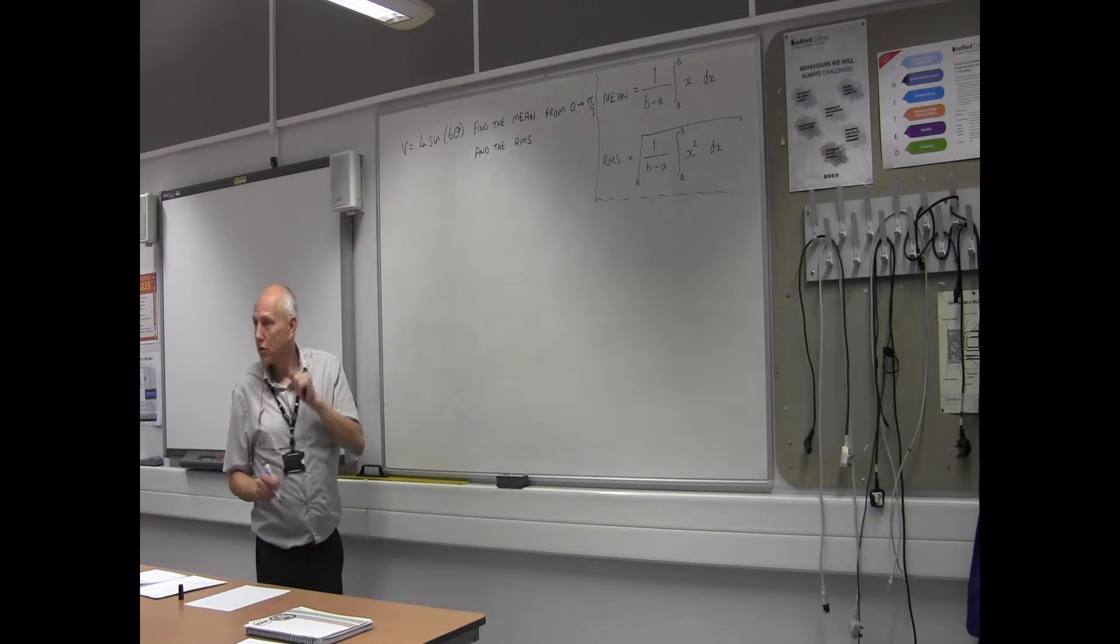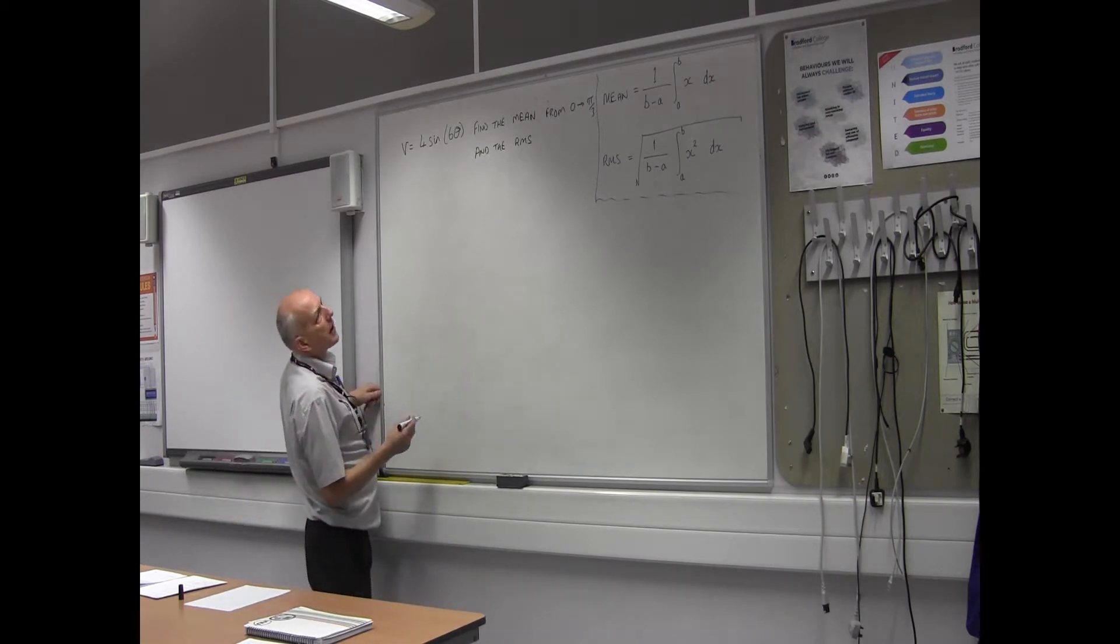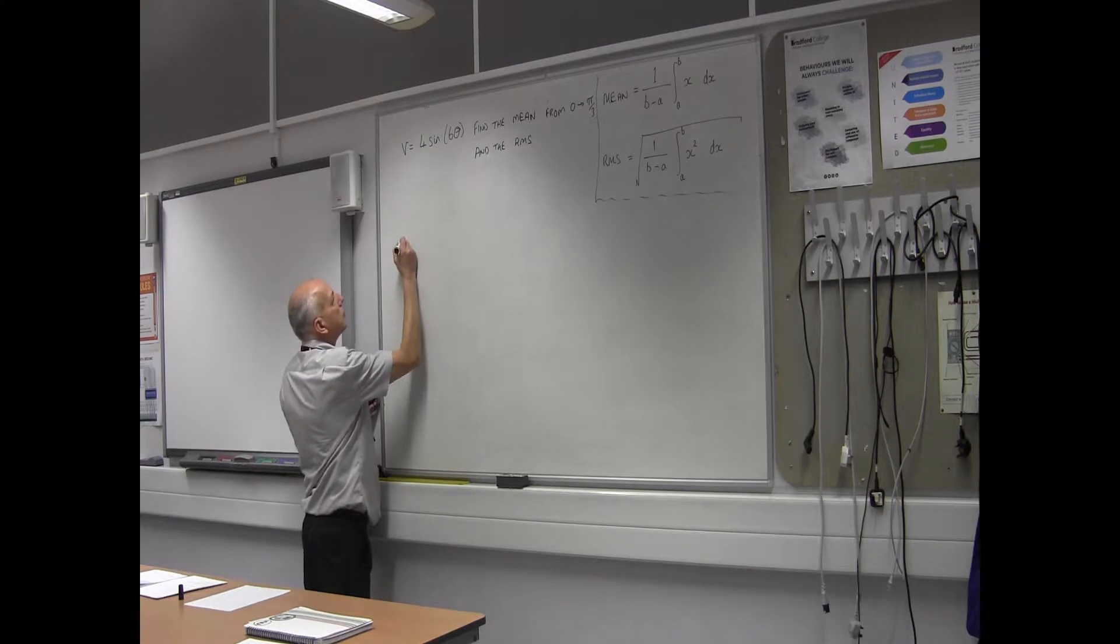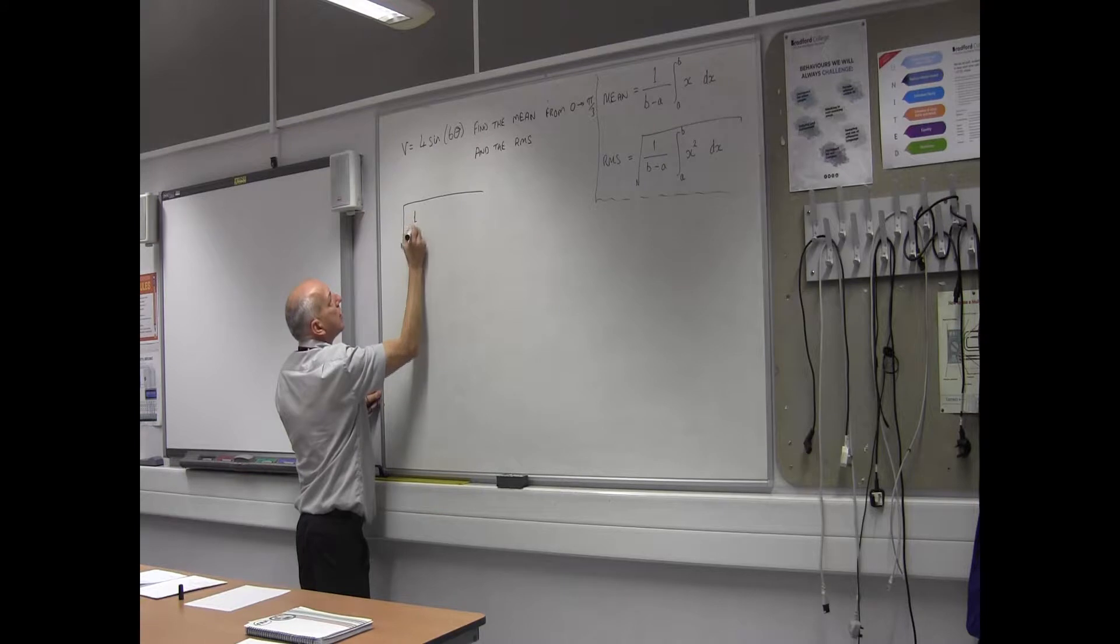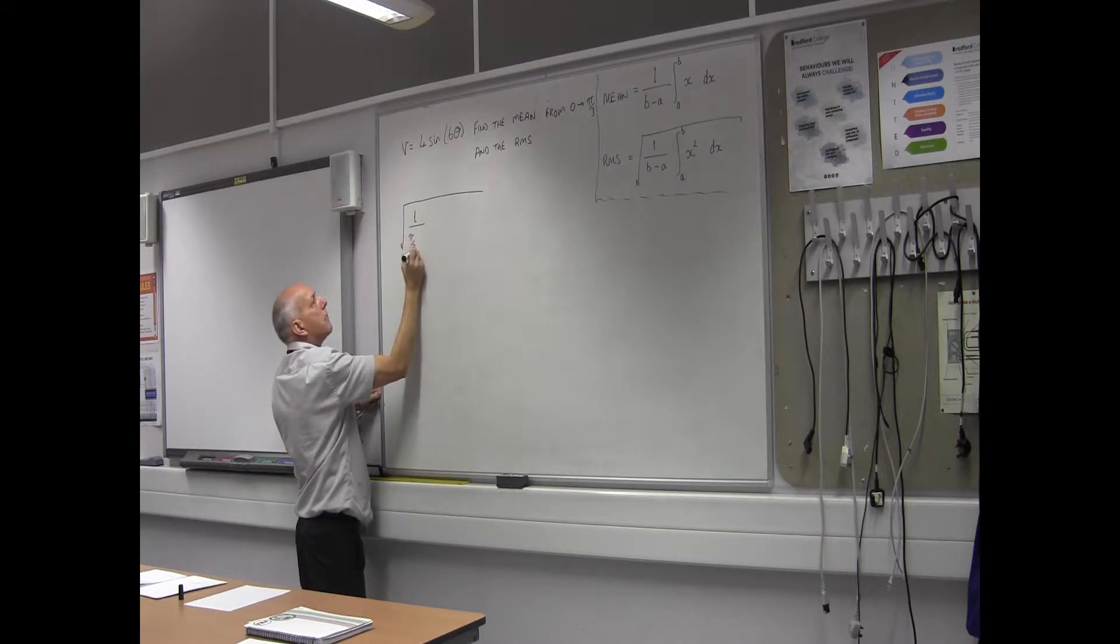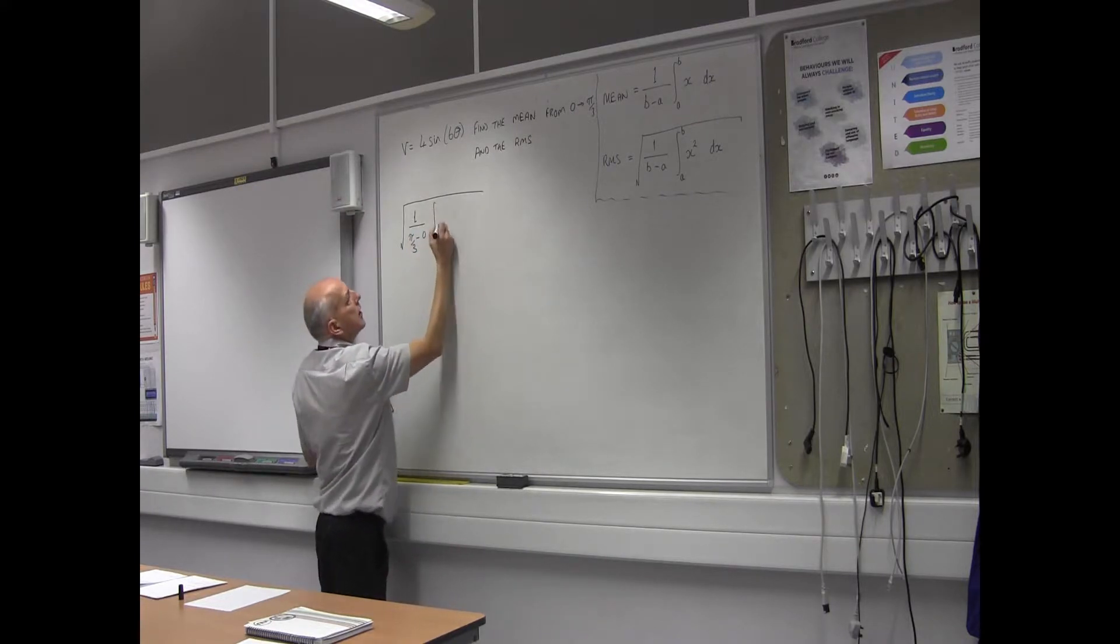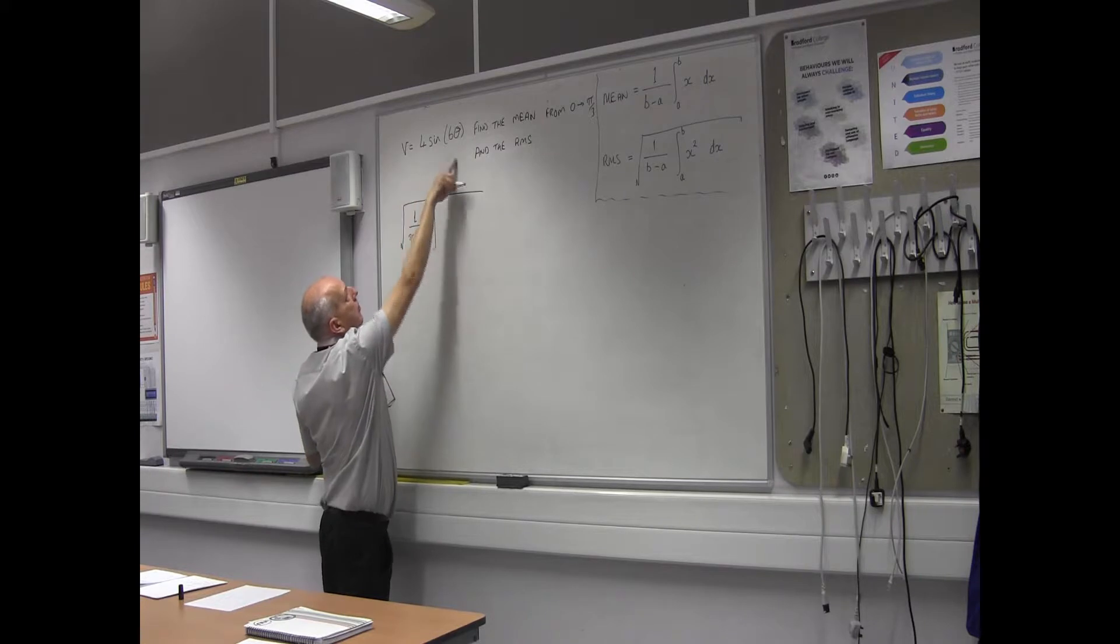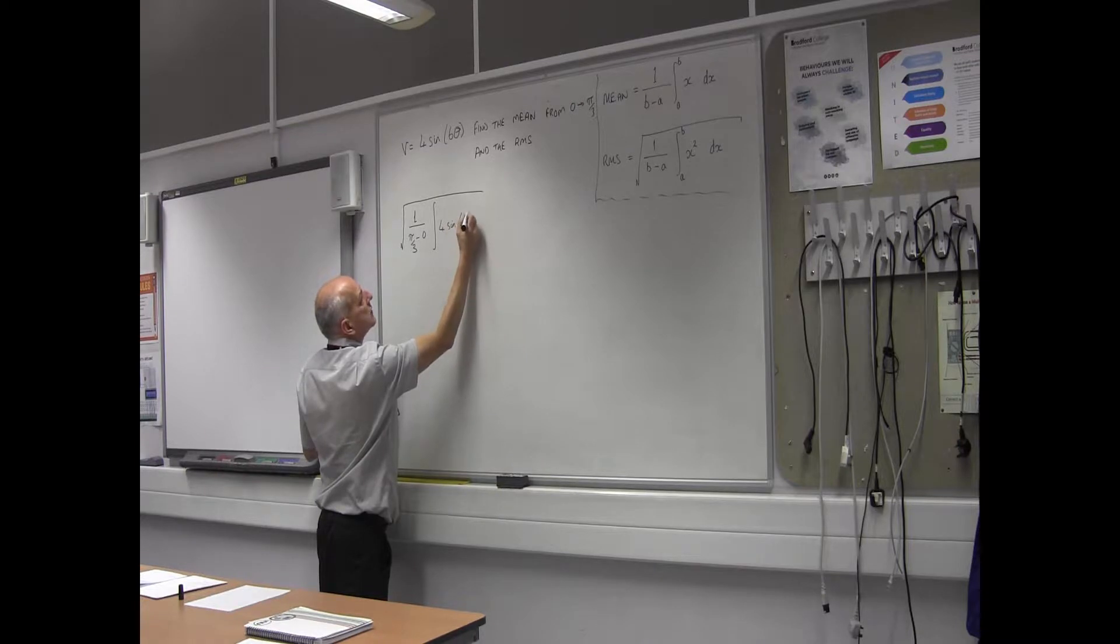Okay, RMS next. Second formula. Let's put the values in, so I've now got it's the square root of all of it, so it's going to be 1 over b, again is π divided by 3 minus 0, times the integration of so it's x squared, so it's this formula squared this time, 4 sine 6θ, and it's all squared.